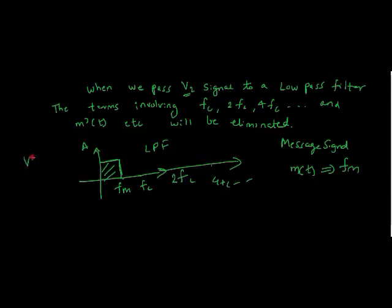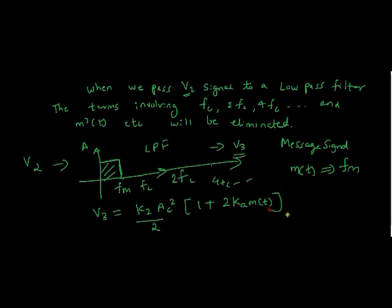We pass V2 to the low pass filter. Here we get V3 signal. That V3 that is our final output of the square law detector is, it looks something like this k2 ac2 by 2(1 plus 2ka m of t). As an engineer what we have to look is, the V3 signal that is the output of the low pass filter is directly proportional to m of t. That is our message signal.